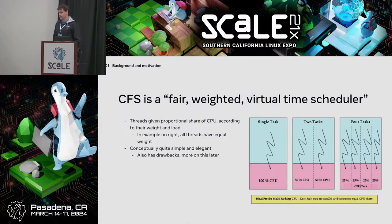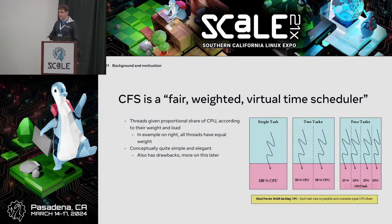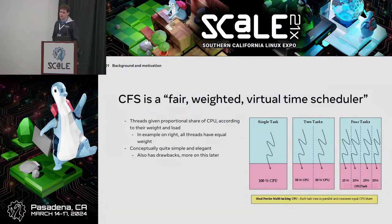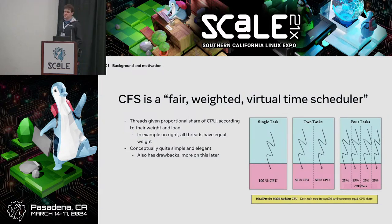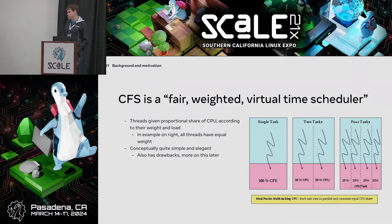Largely what CFS does is it figures out for each task on a core how much CPU it's gotten and scales that proportionally by the amount of weight it has. So if you set niceness on a thread that is changing its weight, and if you're supposed to have a high weight, then you get more time on the core. CFS basically just keeps track of how much time it's given everything and makes sure each one gets its proportional share. With one task it gets 100% of the CPU, two tasks 50%. At any one time a core is running a single task; CFS makes sure to switch threads frequently enough to give everyone their fair share.